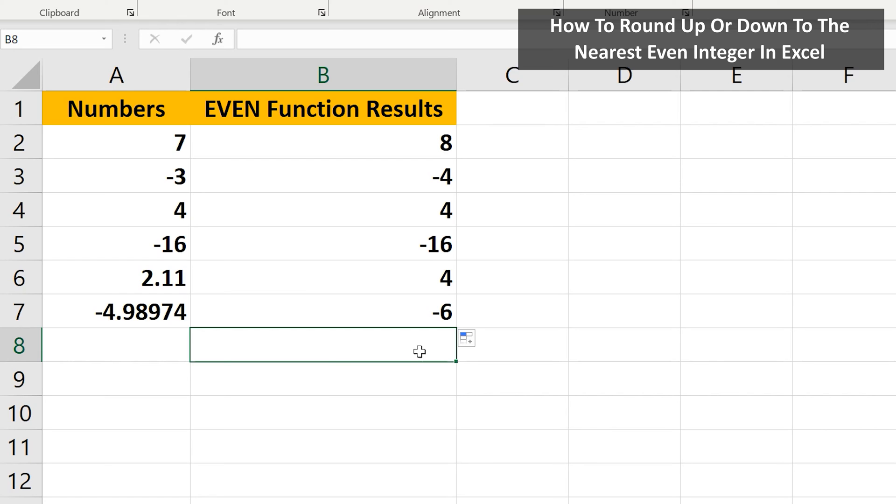If the number is already an even number, there is no change. And when an even number has a decimal, such as in cells A6 and A7, it still rounds up or down, depending on if it's positive or negative.